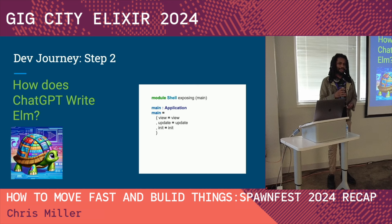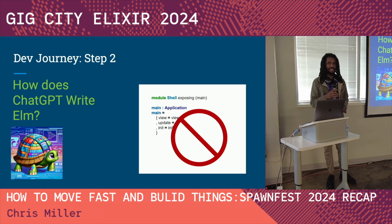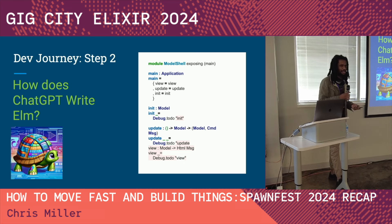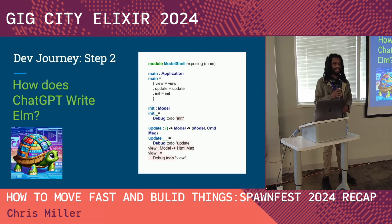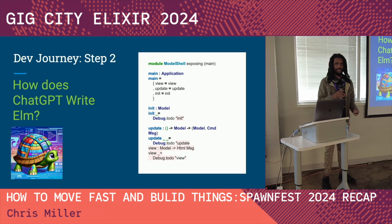We needed ChatGPT to write an Elm program, but we can't just ask it to write it all at one time — that's too hard for a large language model right now. We came up with this idea using Elm's concept of debug.todo, which essentially allows you to have holes through your program that aren't written yet while you focus on other things. Utilizing debug.todo, we realized we could add pieces of the program one at a time, focusing on just one piece.